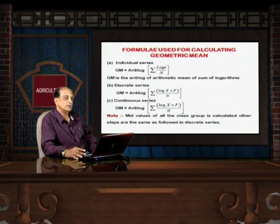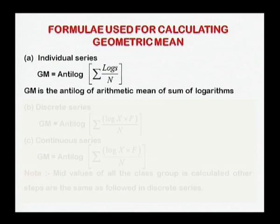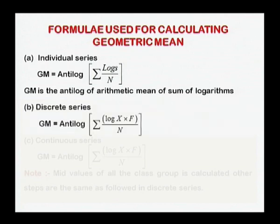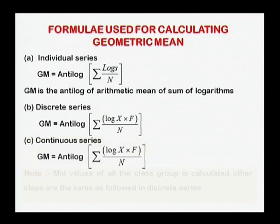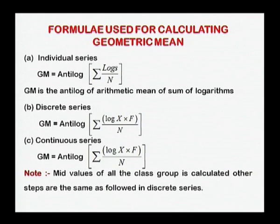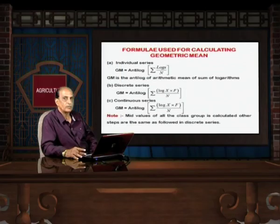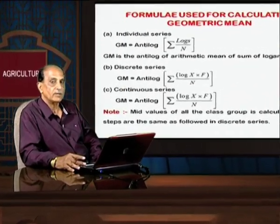In order to calculate geometric mean, these formulas are normally applied. In case of individual series: GM = antilog(Σlog x / n), which is the antilog of the arithmetic mean of the sum of logarithms. In case of discrete series: GM = antilog(Σ(log x × f) / n). In case of continuous series: GM = antilog(Σ(log x × f) / n). An important note — the mid-value of all class groups is calculated first, and other steps are the same as followed in discrete series.